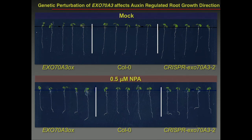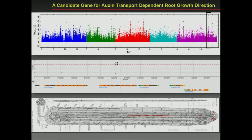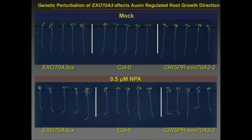We then did things to this gene — which has the memorable name Exocyst70A3. It is part of a very important multi-subunit complex, but we just call it Exocyst70A3. You can basically do two things with a gene to study its function: overexpress it to make more of it everywhere and see what happens, or destroy it using CRISPR-Cas9 gene editing technology — a relatively new technology for making precision genetic changes.